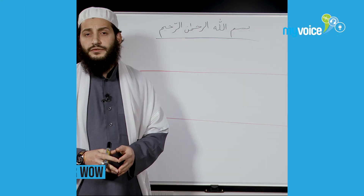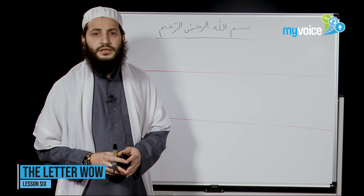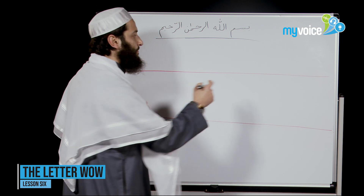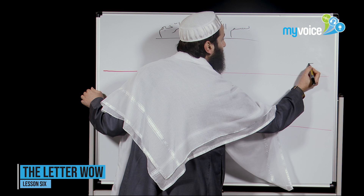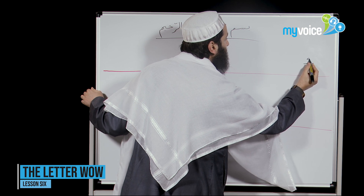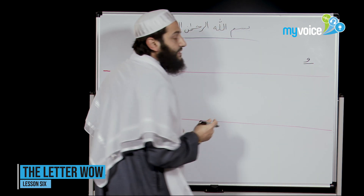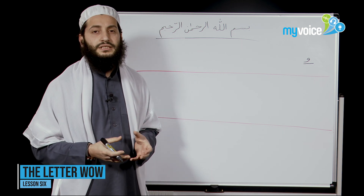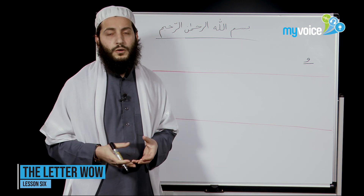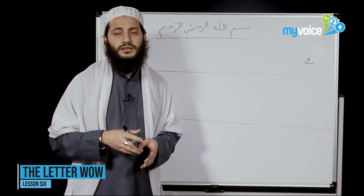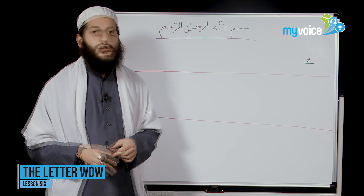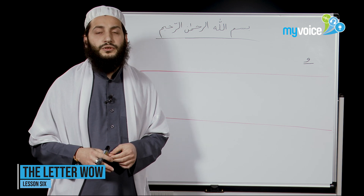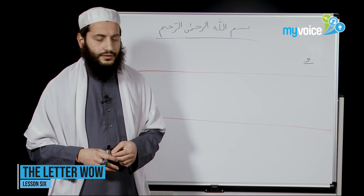In the previous lesson, we took the sign of Dhamma — Harakat al-Dhamma — and this sign has a big relation with the letter WAW. That is why we jump to WAW. During the lesson today, you will understand more why we do that.